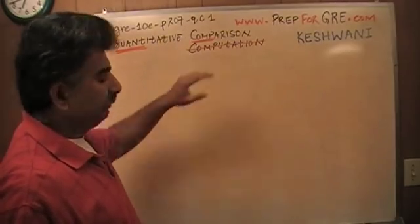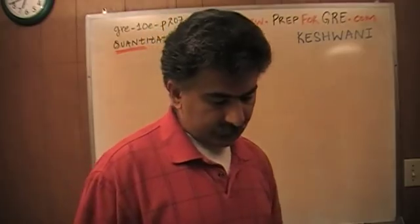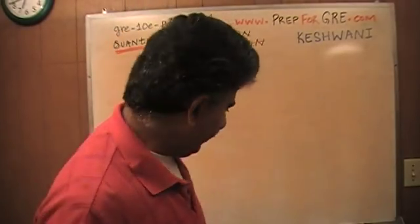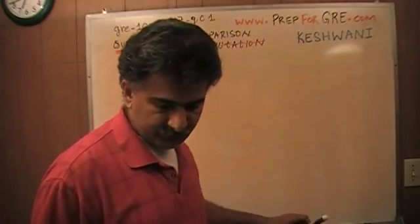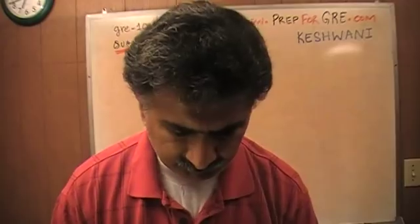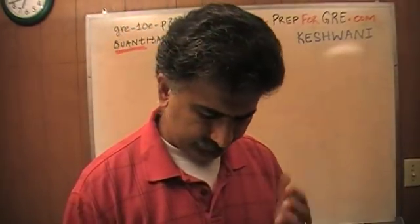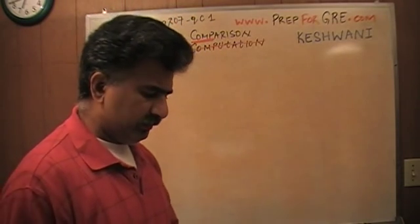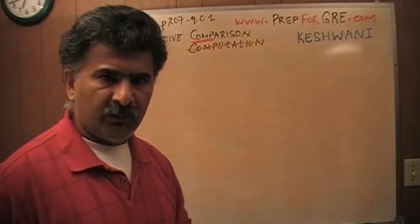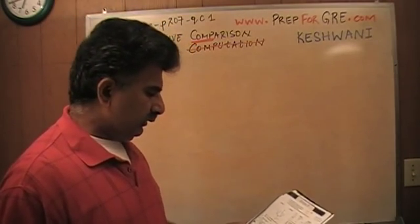I'm going to start with number one. These are called quantitative comparison. The first few are very simple and straightforward. I was debating whether or not to skip this particular one — it's too simple — but I didn't want to skip anything. I wanted to go in sequence, 1 through 15, without skipping anything at all. It's very simple: 93% of people who took the exam got this question right; only 7% missed it.